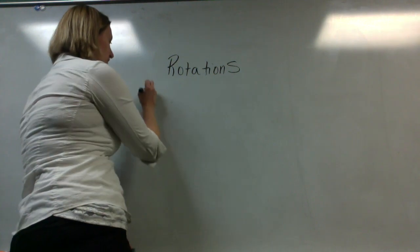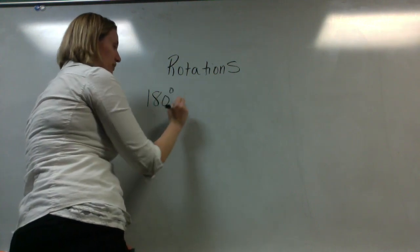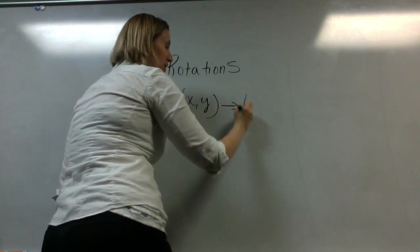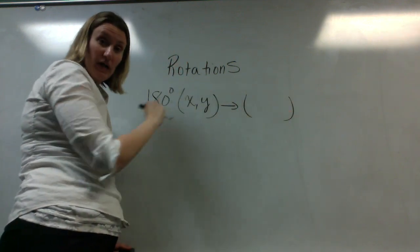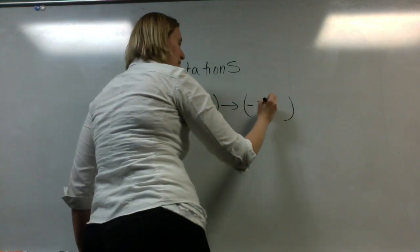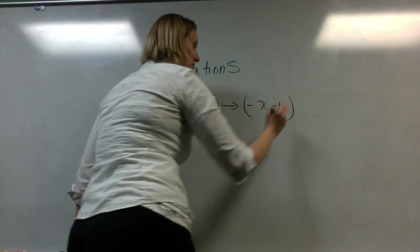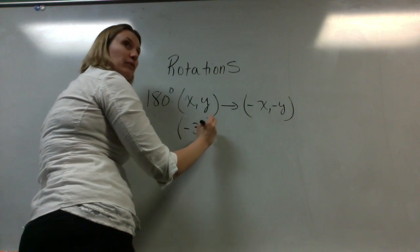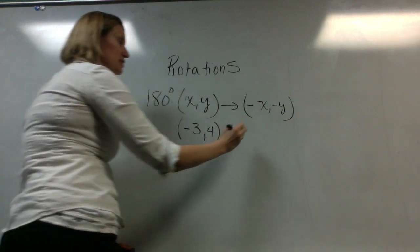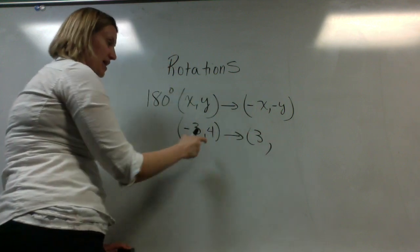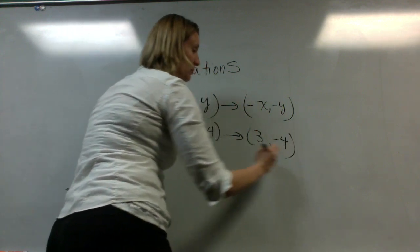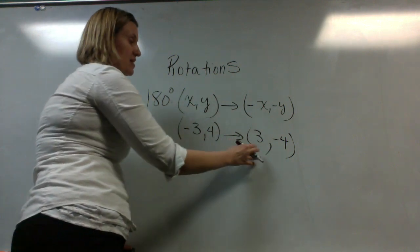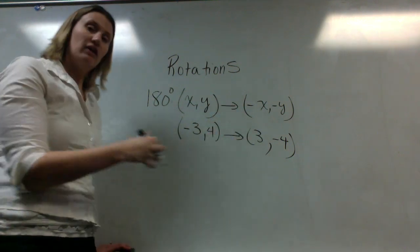If you want to rotate a point 180 degrees, you take the coordinate point that you have. We are actually going to keep x and y in the same order — we're not going to switch them. We're just going to do the opposite of x and the opposite of y. So if I have the coordinate point (-3, 4), the opposite of x would become positive 3, and the opposite of y would become negative 4. This is my pre-image, and this is my image — that is how you rotate a single point 180 degrees.